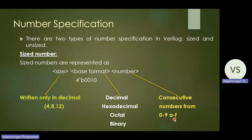For example, '4'b1010' means a 4-bit binary number with value 1010, which represents the decimal value 4 in binary. This is how a sized number is represented in a Verilog program.